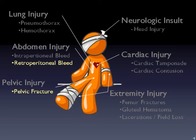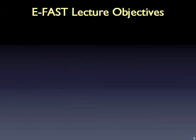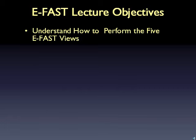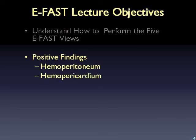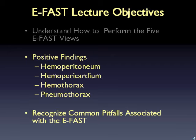FAST is included under the C of the ABCs performed in an unstable trauma. Today, we will cover the performance of the five eFAST views. This will include the identification of hemoperitoneum, hemopericardium, hemothorax, and pneumothorax. Exam pitfalls will also be discussed.